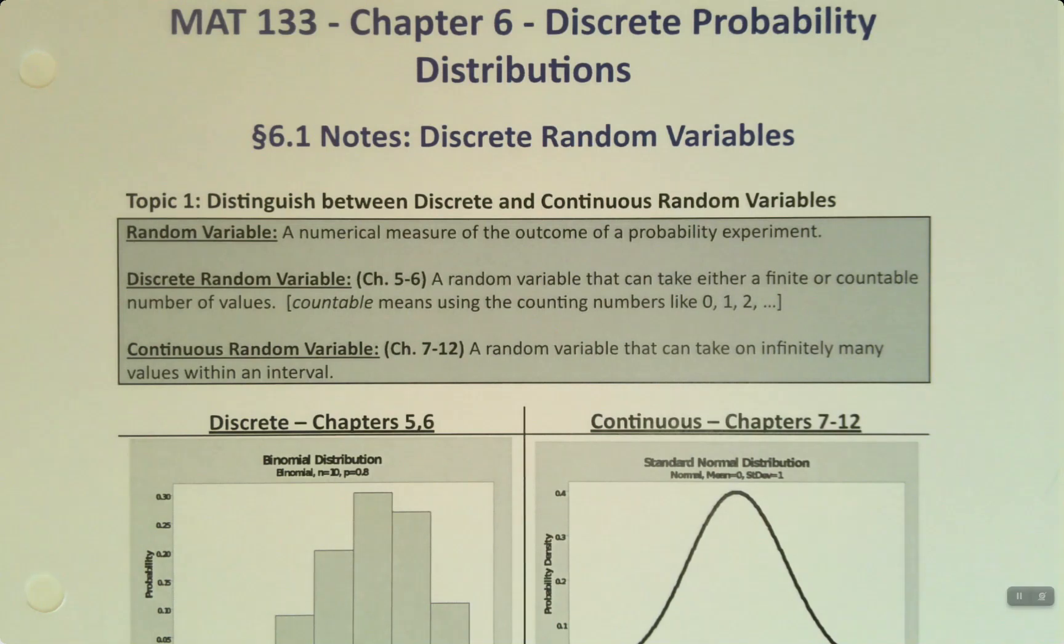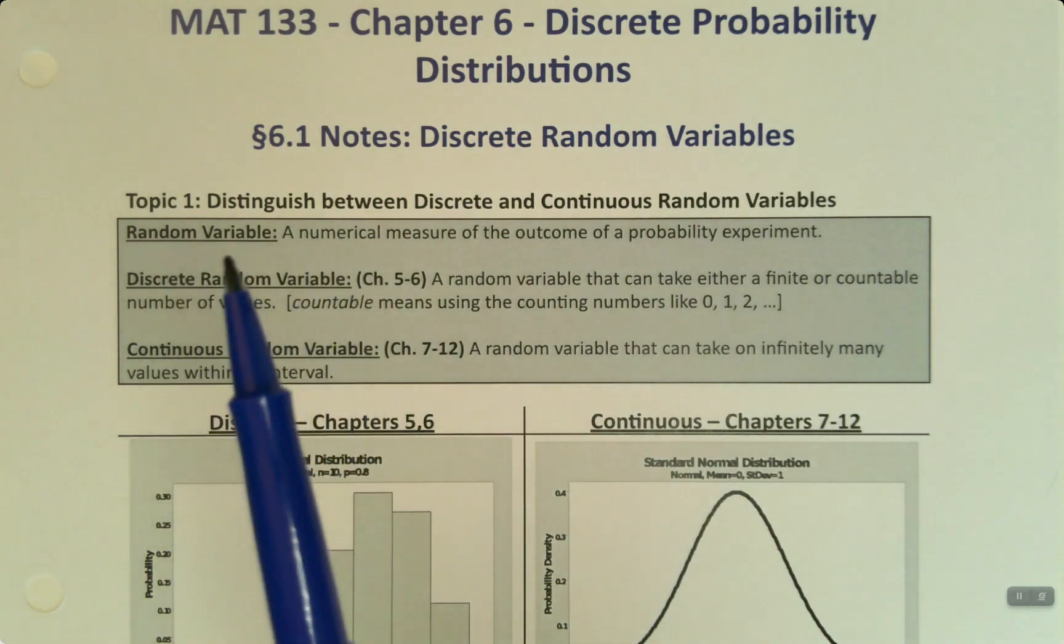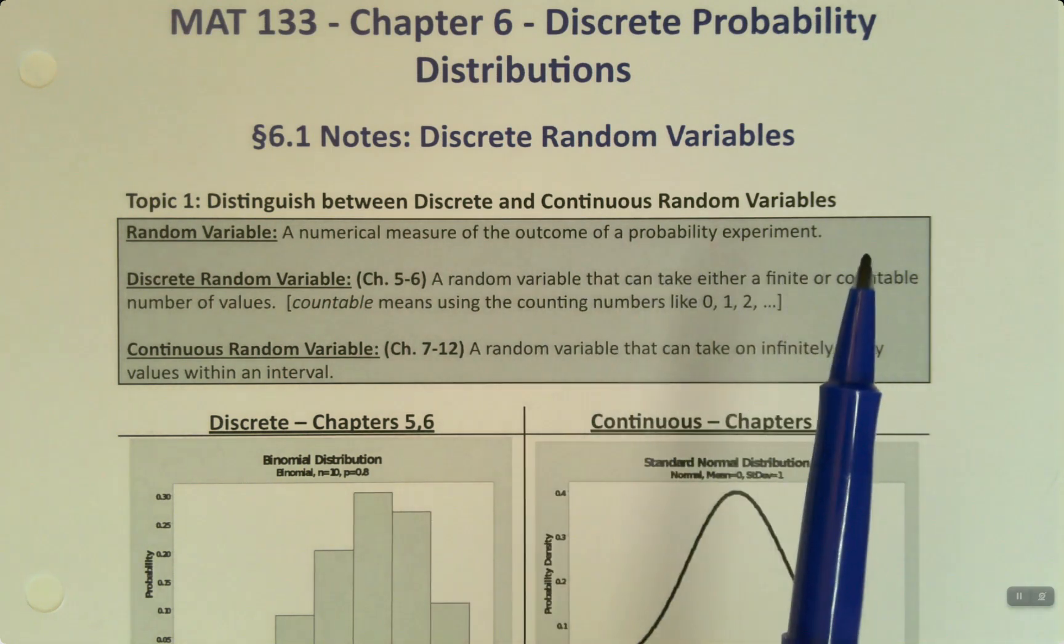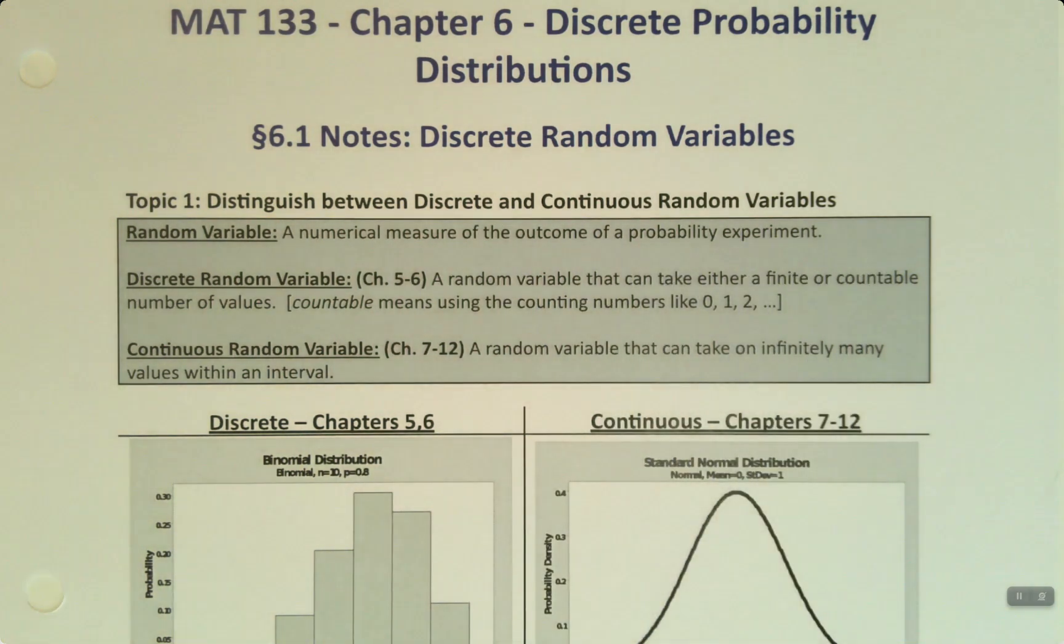In Chapter 6, we're going to tackle discrete probability distributions. Now, before we get into all of that, we want to take a moment and remind ourselves how to distinguish between discrete and continuous random variables, in this case, as opposed to data, which we learned about in Section 1.1.